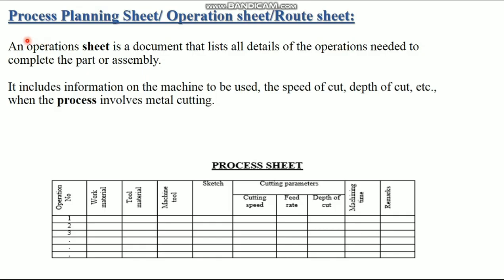This is a process planning sheet, also called an operation sheet or route sheet. An operation sheet is a document that lists all the details of the operations needed to complete the part or assembly. It includes information on the machine to be used, the speed of cut, depth of cut, etc., when the process involves metal cutting. This is an example of a process planning sheet — it contains all the data about the product.